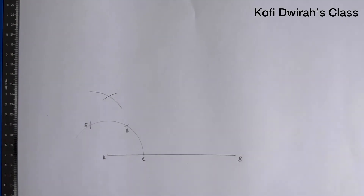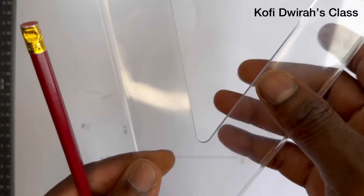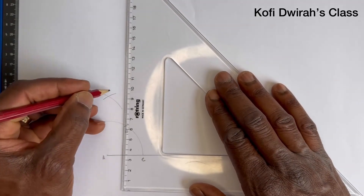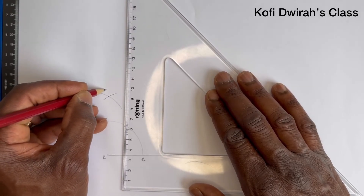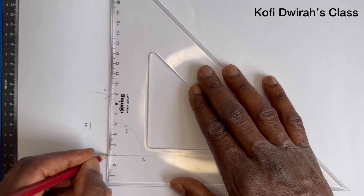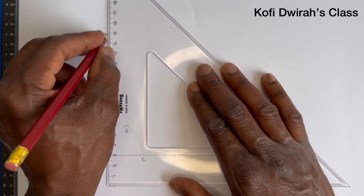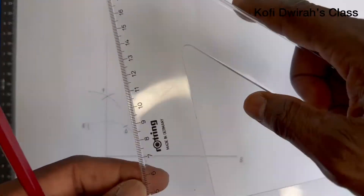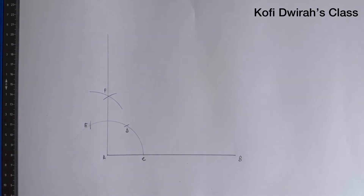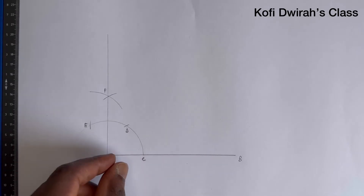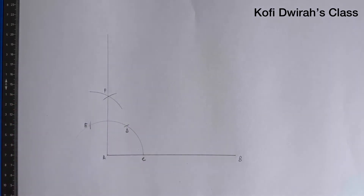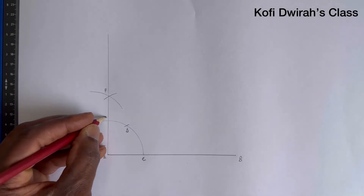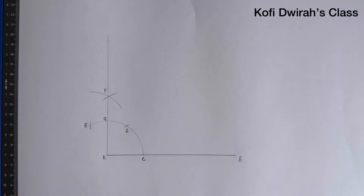Then you draw a line from A through this point, so you consider here to be point F. You draw a faint line from here. We now want 45 degrees — this angle here is 90 degrees. After getting this angle, then you bisect this angle.